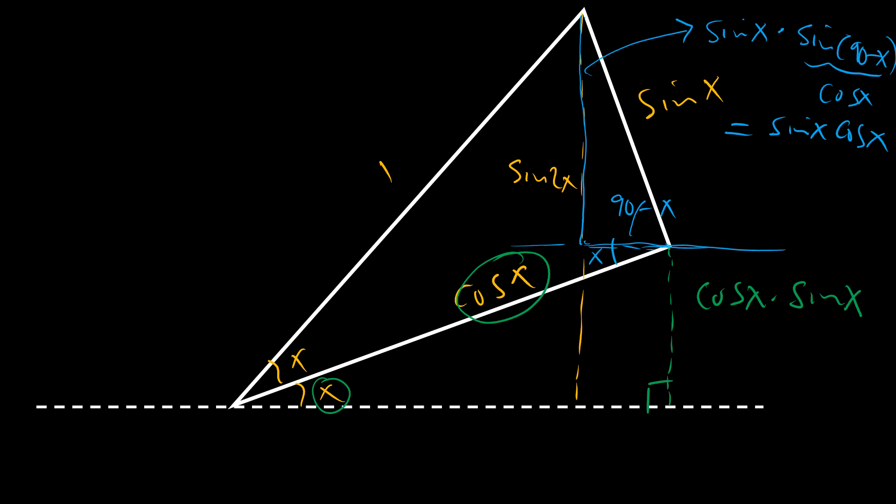So this entire height from here up, which is sine 2x, equals the first sine x cosine x plus the second sine x cosine x, which means sine 2x equals 2 sine x cosine x.